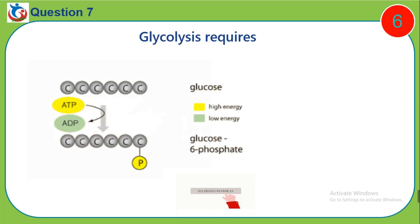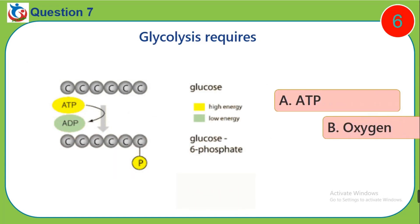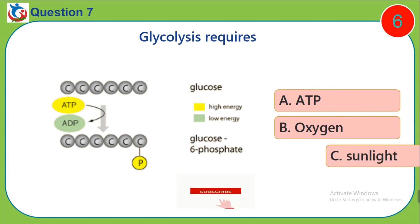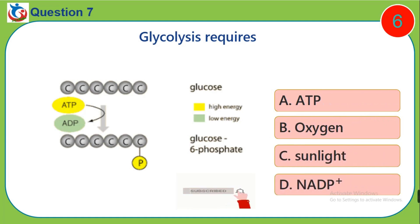Question 7. Glycolysis requires: A. ATP. B. Oxygen. C. Sunlight. D. NADP+.